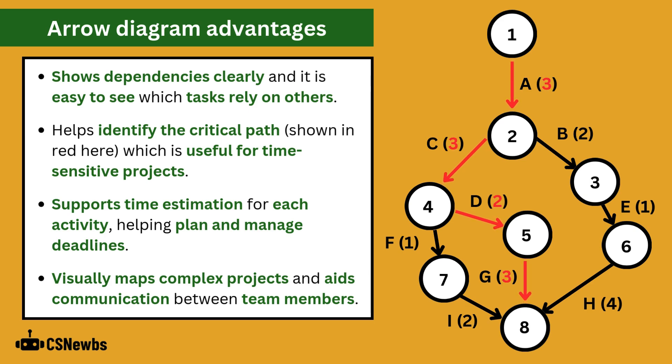Adding up the expected duration for the activities on the critical path in this example gives 11 days so the development team knows that it will take a minimum of 11 days to complete the project which is good for setting deadlines and expected time frames.